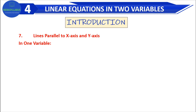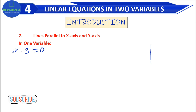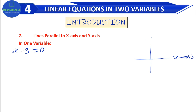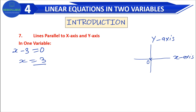Now we talk about lines parallel to the x-axis and y-axis. First in one variable — take the example x minus 3 is equal to 0. When we draw the Cartesian plane with x-axis and y-axis, if we solve this, x equals 3. On the x-axis, mark 1, 2, 3 — x equals 3 is plotted at x equals 3.